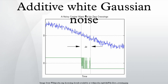White refers to the idea that it has uniform power across the frequency band for the information system. It is an analogy to the color white which has uniform emissions at all frequencies in the visible spectrum.